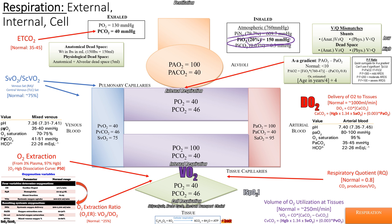Instead of inhaling 150 mmHg of oxygen, on Everest you're inhaling 40. Up here in the valley we're at 698 mmHg, so we inhale a little less than at sea level. That inhaled oxygen comes into our lungs, but there are lung issues that can explain why alveolar O2 is 100 rather than 150 — because of dead space in the bronchioles and trachea that don't exchange oxygen.